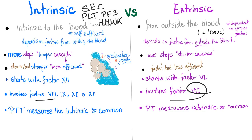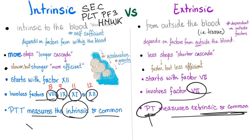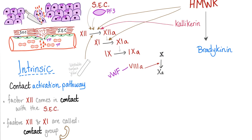Factors in the extrinsic pathway: only factor 7. Factors in the intrinsic pathway: 12, 11 — skip 10 because 10 is the most important — 9 and 8. PT measures the extrinsic pathway and the common pathway. PT stands for prothrombin time. PTT measures the intrinsic and the common pathway. PTT stands for partial thromboplastin time. So in the intrinsic pathway: 12, 11, skip 10, 9, 8 — activate factor 10, boom.